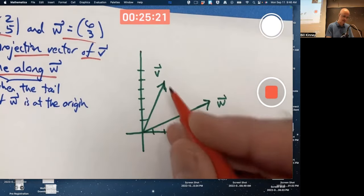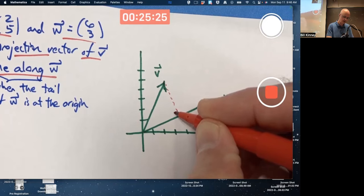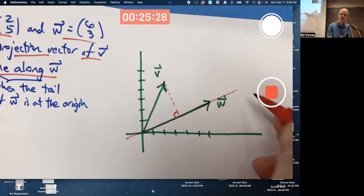In this picture, where here's V and this is W, you draw a perpendicular down to the line along W, which I can draw as well if I wanted to.